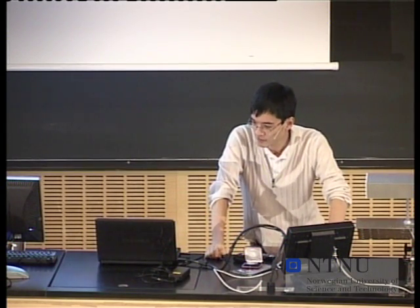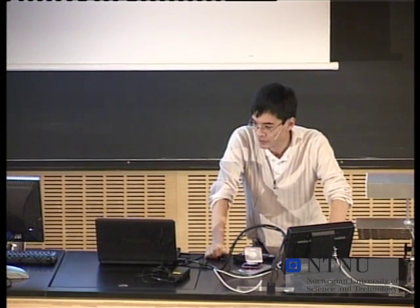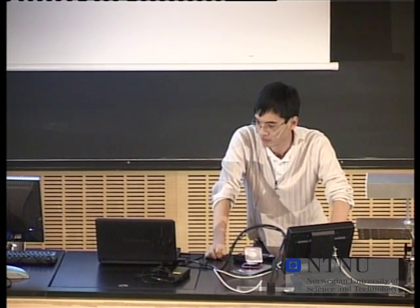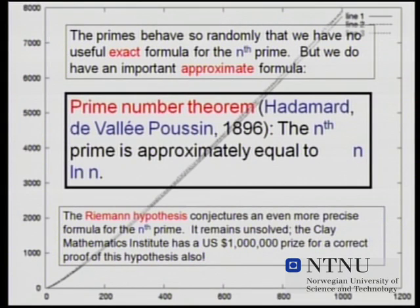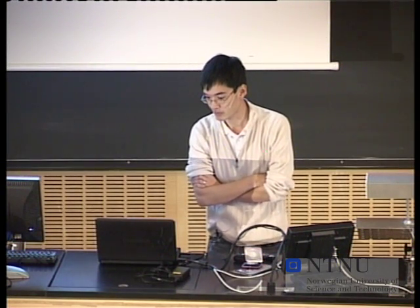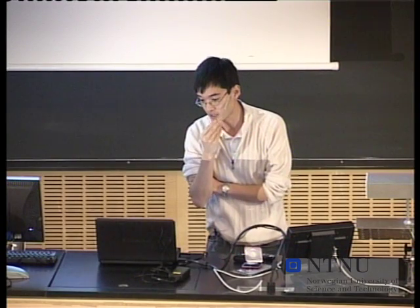Strangely enough, we do have something almost as good in many ways — an approximate formula for the nth prime. The nth prime is approximately equal to n times the natural log of n when n is large. More precisely, if you take the nth prime and divide it by n log n, this converges to 1 as n goes to infinity. This is a very famous result in number theory called the prime number theorem, proven in 1896.